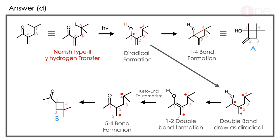Here you have to learn two things. One is that there is a gamma hydrogen, which is key in the Norrish Type 2 reaction. And the intermediate has the possibility of extending itself through the alkene or any strained system.